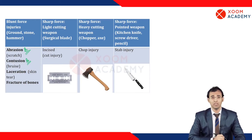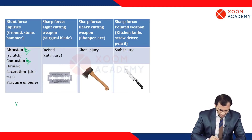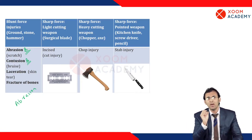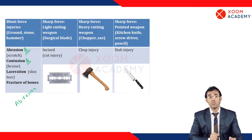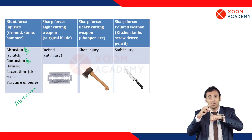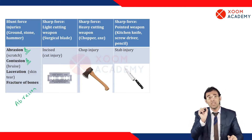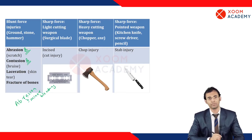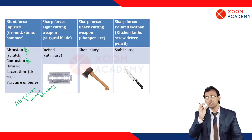How do we differentiate abrasion and contusion? Whenever a person's nails, a nail prick injury, or a thorn injury causes rupture of the external superficial epidermal layer with minor external bleeding, it is called an abrasion.